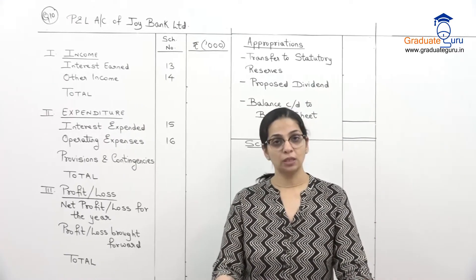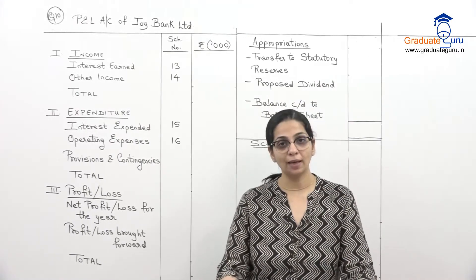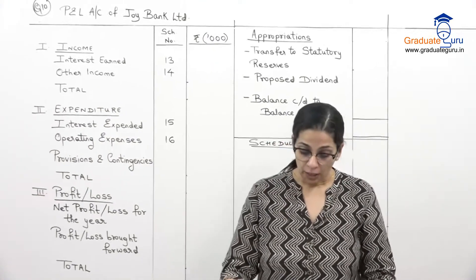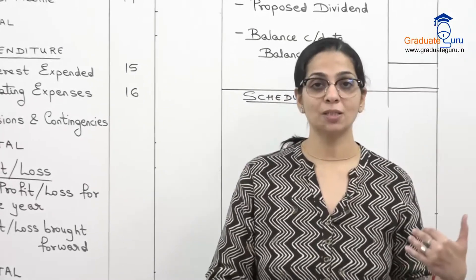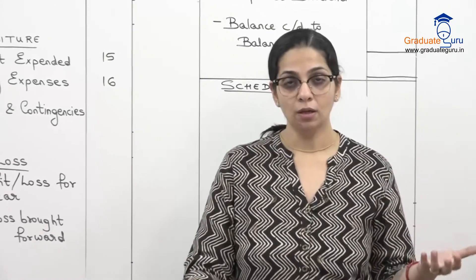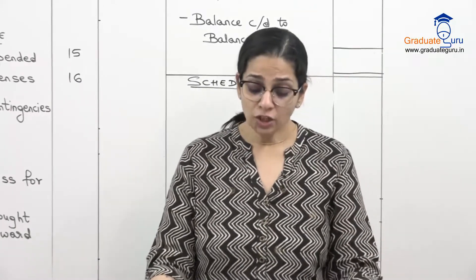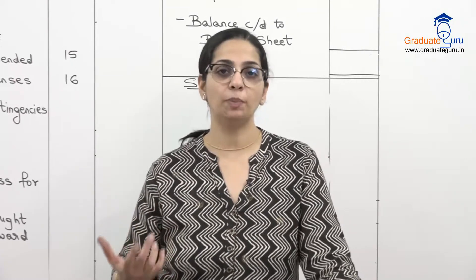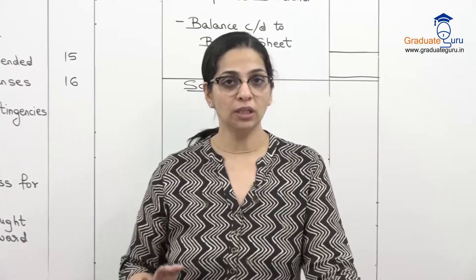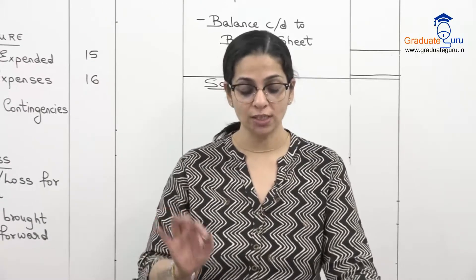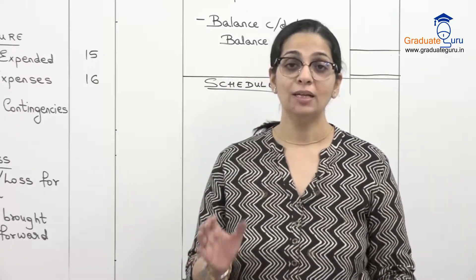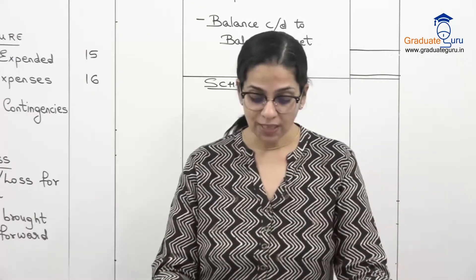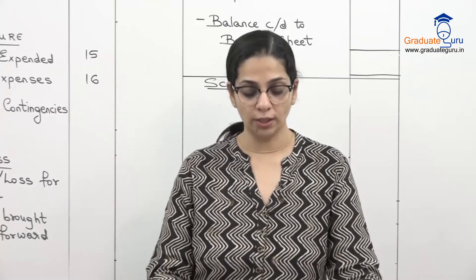From the following figures extracted from the books of Joy Bank Limited, prepare P&L account with schedules for the year ended 31st March 2020. As I read the sum, we'll be marking which item will go in which schedule. Interest and discount received — this is the income of the bank, it will go in the interest earned schedule, that is schedule number 13. Interest paid on deposits — this is interest expended, that is schedule 15. Issued and subscribed capital — now capital is never a part of P&L, so we'll put a cross on this. Salaries and allowances will be operating expense, schedule 16.